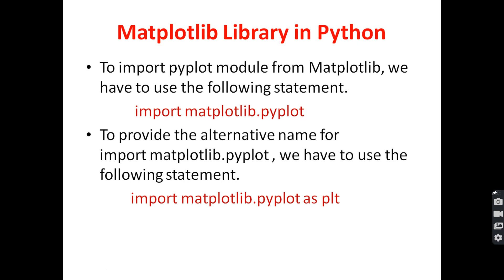To provide an alternative name for import matplotlib.pyplot, we have to use the following statement: import matplotlib.pyplot as plt. Every time, without writing matplotlib.pyplot, we simply use another alternative name called an alias. That alias is plt. plt is the alternative name for matplotlib.pyplot. Whenever matplotlib.pyplot is required, simply use the alternative name plt.